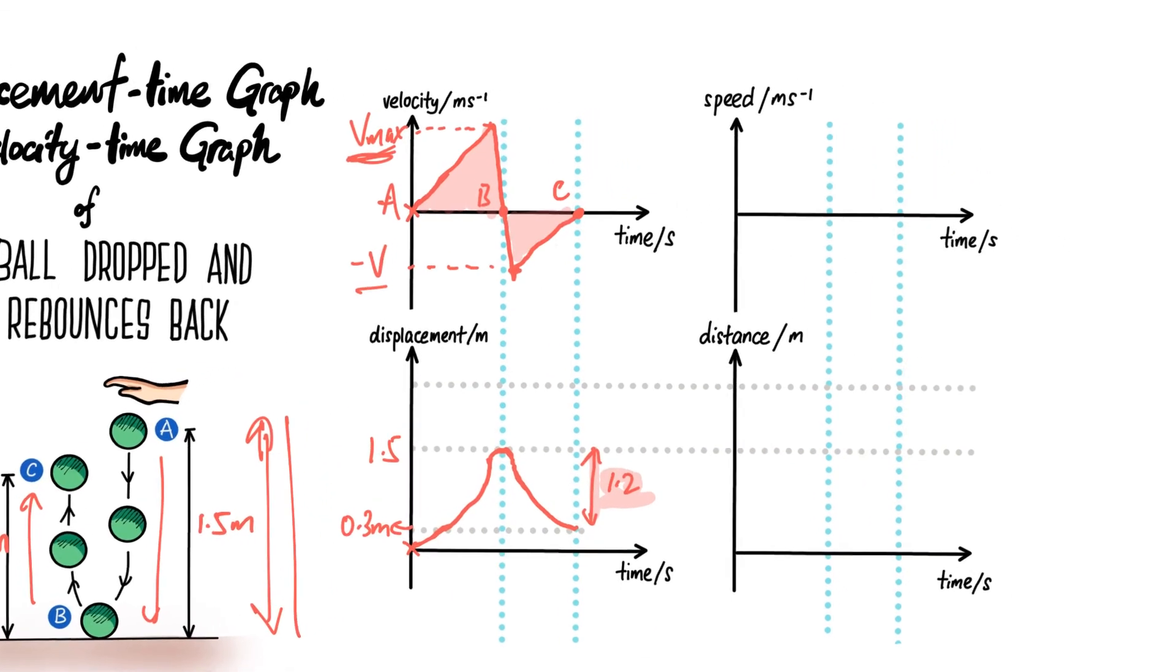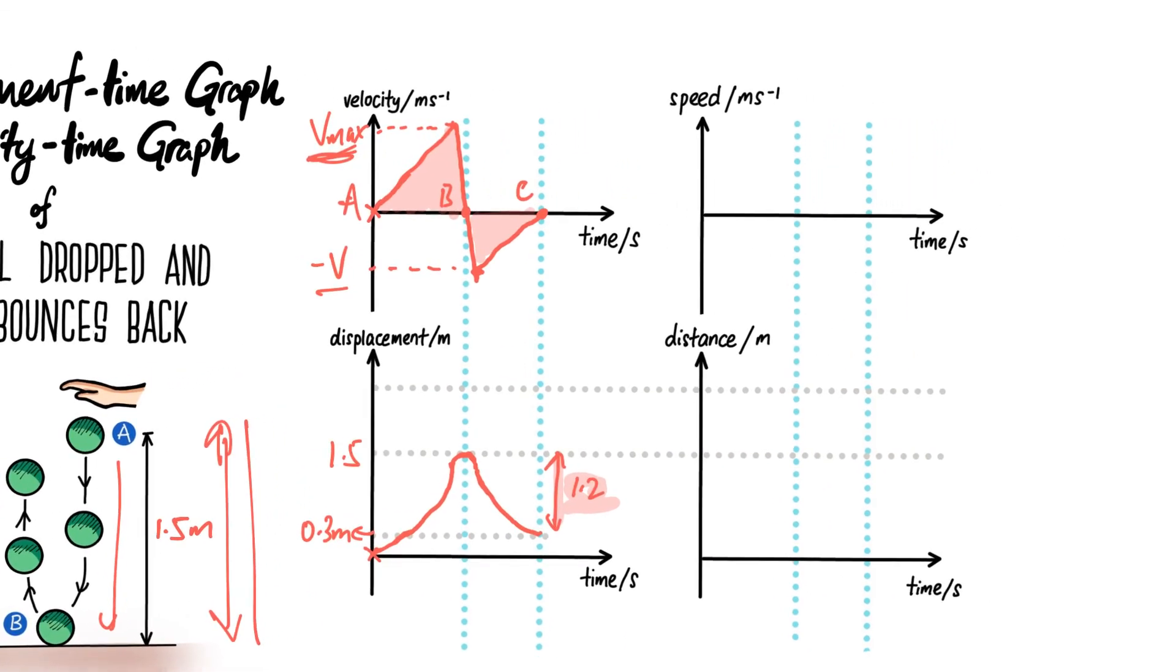Now let's take a look at the speed-time and distance-time graphs. The positive portion, the initial part here, will be the same, which is a constant gradient. Then just at this point here is where it's about to reach the floor, and when it hits the floor there will be a sudden deceleration, and then when it bounces back...